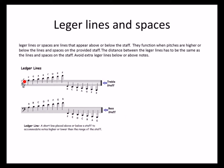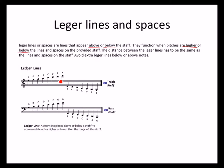What is a ledger line? Ledger lines or spaces are short lines that appear above or below the staff. They function when pitches are higher or lower than the lines and spaces on the provided staff. The distance between the ledger lines has to be the same as the lines and spaces on the staff. Avoid extra ledger lines below or above the notes — you cannot place a line where there is no note required.